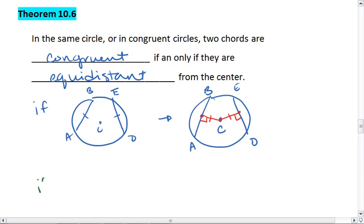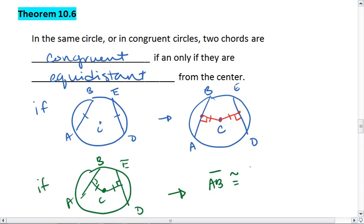Conversely, if two chords are equal distance, so let's say we have our two chords and we know that they're equal distance, this means that the two chords are congruent. So it works in both directions. If two chords are congruent, then they're equidistant from the center. If chords are equidistant from the center, then the two chords are congruent.